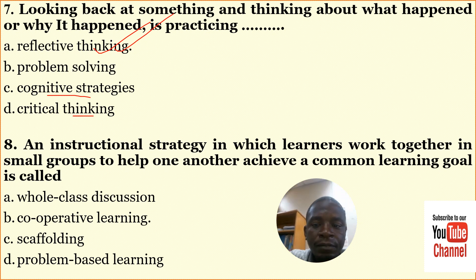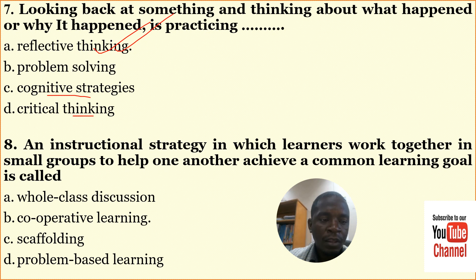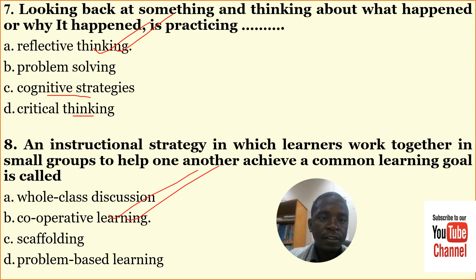Number eight: An instructional strategy in which learners work together in small groups to help one another achieve a common learning goal is called — A: whole class discussion, B: cooperative learning, C: scaffolding, D: problem-based learning. The correct answer here is B: cooperative learning.